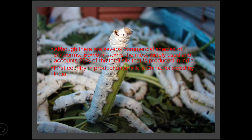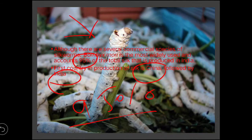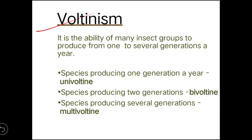Although several commercial species of silkworm exist, Bombyx mori is most widely used. Around 95% of total silk produced in India comes from the mulberry silkworm. The first country in silk production is China, followed by India. Within India, Karnataka state is the highest producer of mulberry silk.